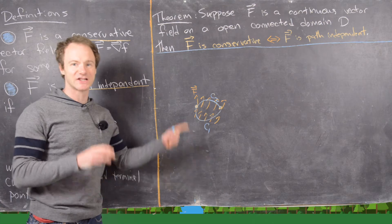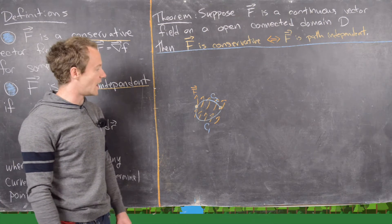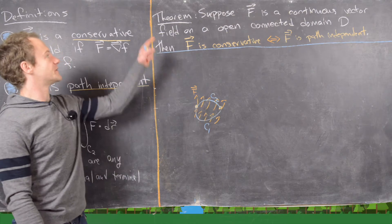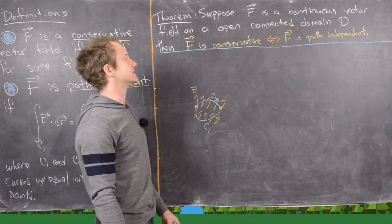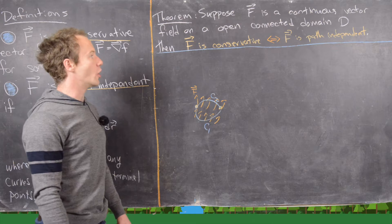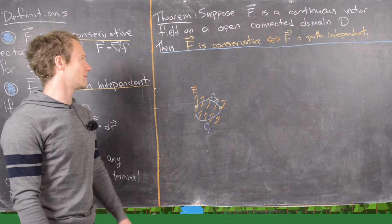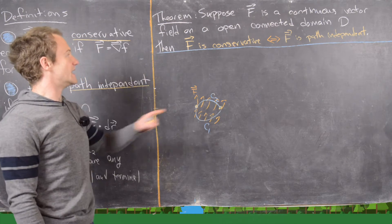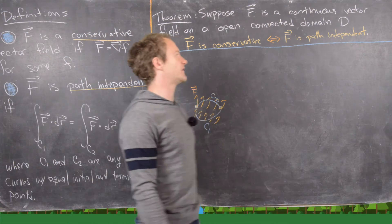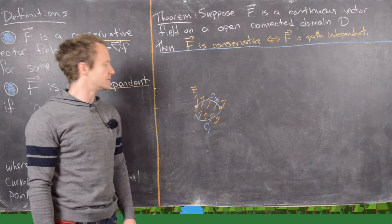Now let's look at the theorem we want to prove. The theorem states: if F is a continuous vector field on an open connected domain, then F is conservative if and only if F is path independent. This is what we want to prove.